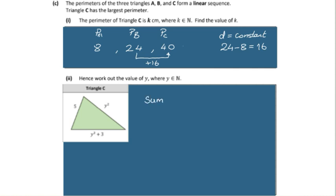Just like before with the perimeter in part B. So we have 5 plus y squared plus y squared plus 3. Check that and everything looks fine. So that will give 2y squared for these two. And then we have a 3 and 5 is an 8.